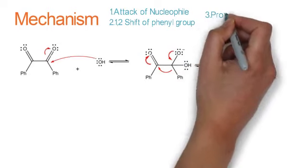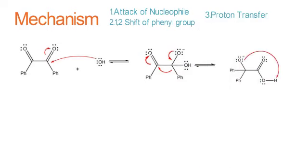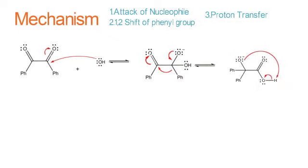Third step is transfer of proton from hydroxyl group towards oxonium ion by giving away an electron towards the oxygen.